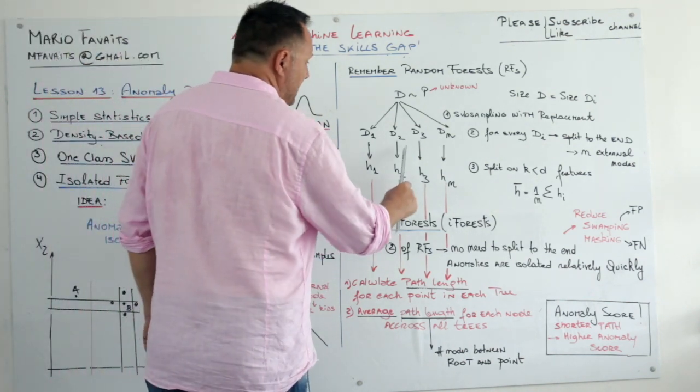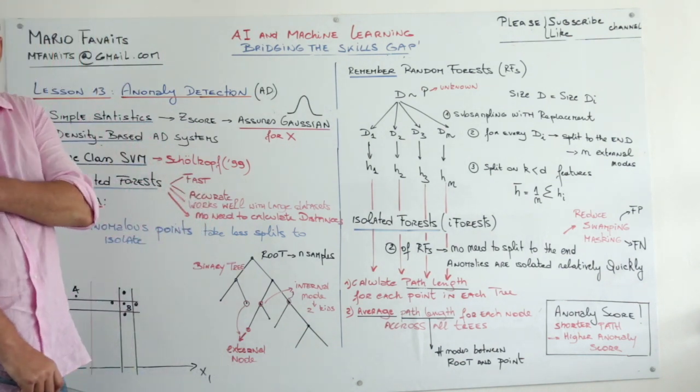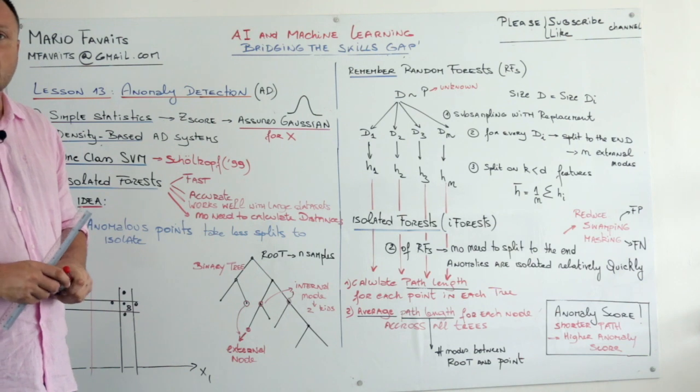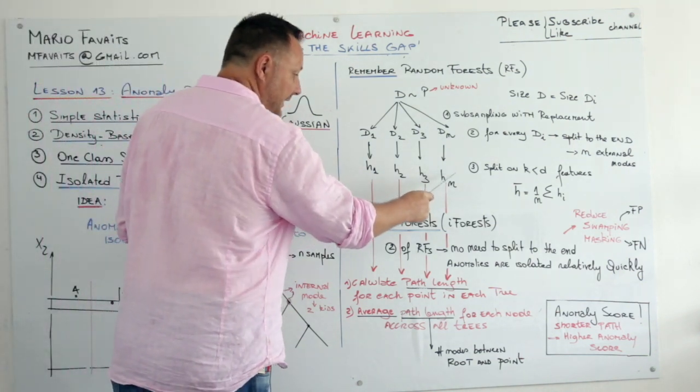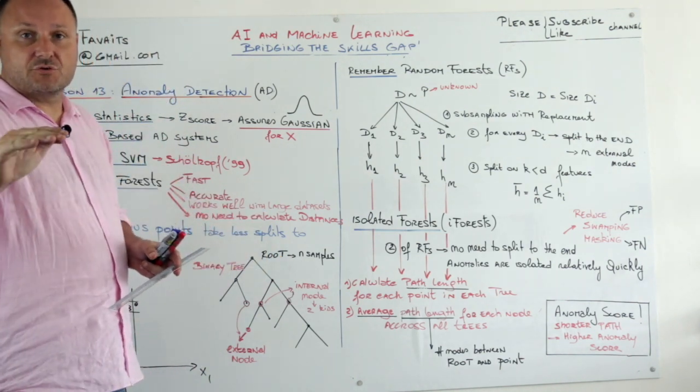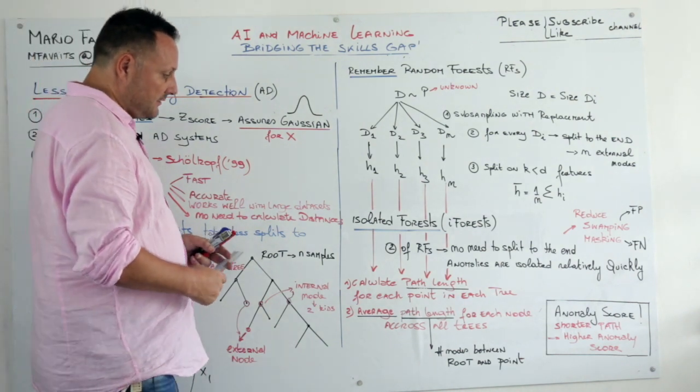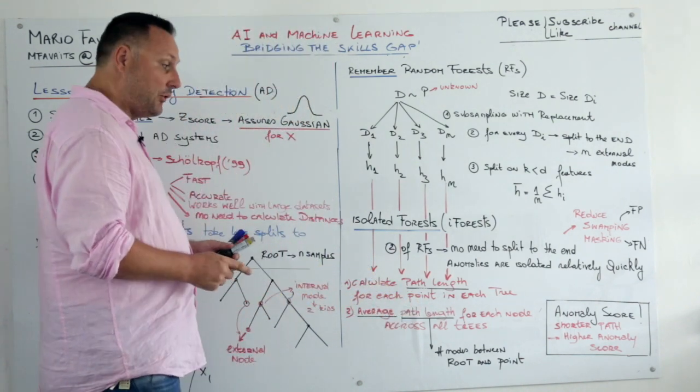But in dataset two, this same point A, it could take five nodes. The path length could be five nodes. So you do this for every point in every tree. And then at the end, you average across the trees for every point.